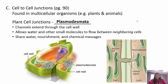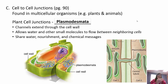Moving on to cell junctions. Plants are simple - they have one type called plasmodesmata: channels between the cell walls that are always open and always allow flow between neighboring cells. This way they can share nourishment, water, or messages. If you look at live cells under a microscope, you can actually see cytoplasm streaming between cells.